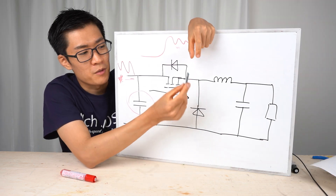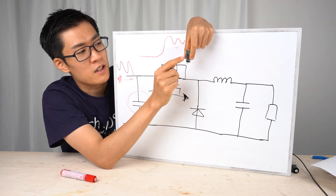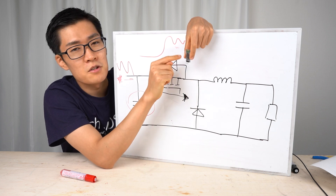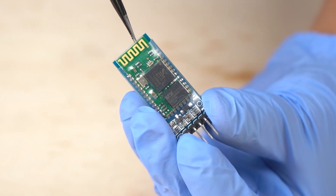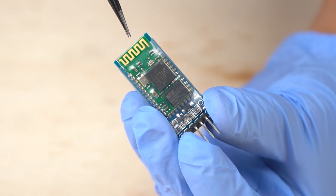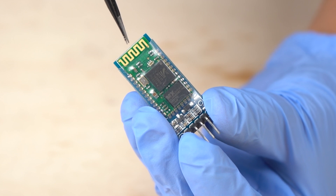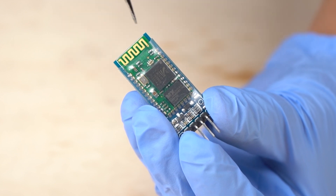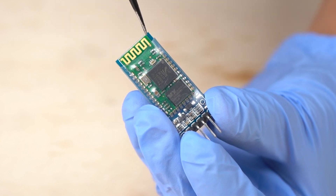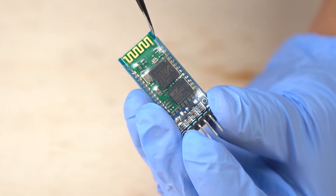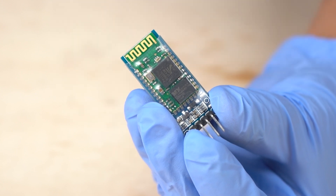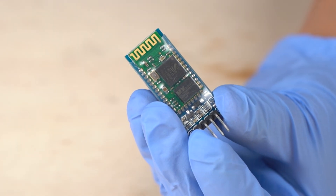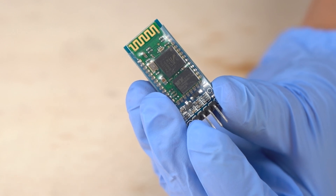Next I'll explain radiated noise. On a circuit board there are circuit patterns to pass currents. When a high-frequency voltage is applied or a high-frequency current flows through a circuit pattern, the pattern works as an antenna. High-frequency components leaked from such an antenna on a circuit board are called radiated noise.